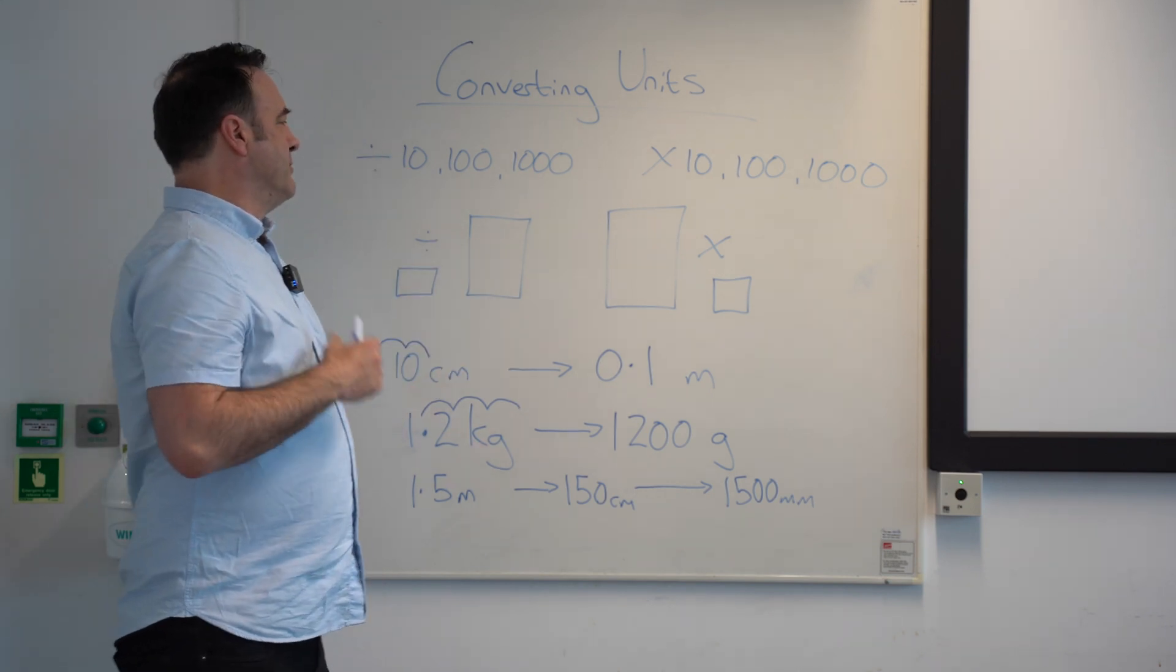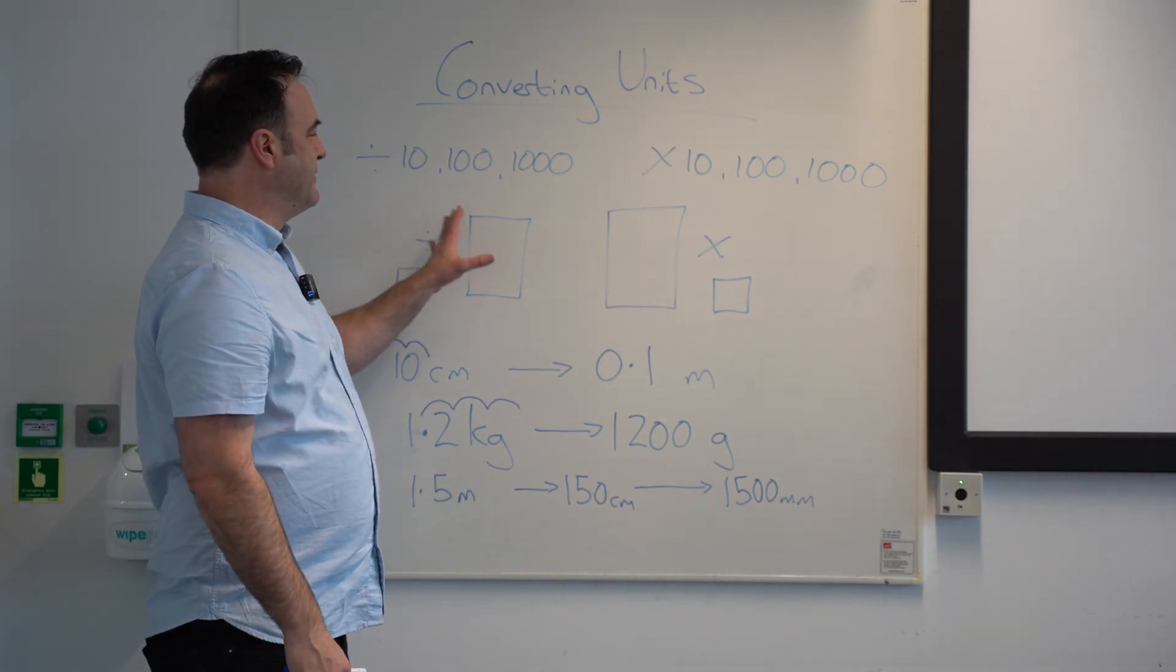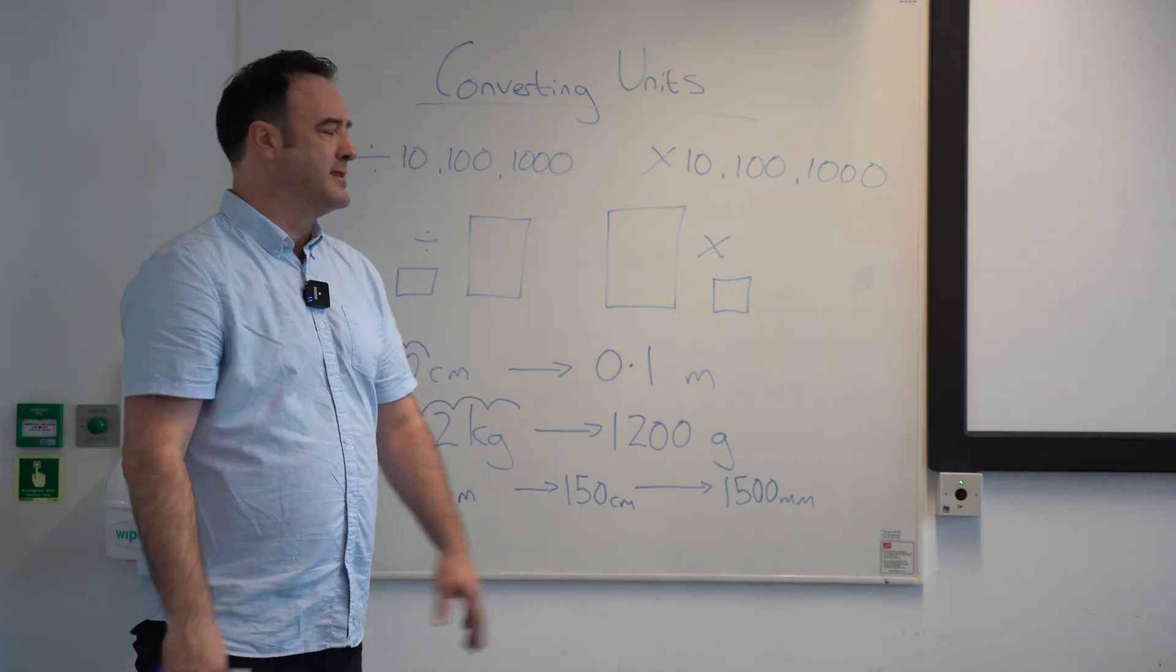The thing that kids get wrong the most is they're never sure whether they're dividing or multiplying, sometimes they get confused.